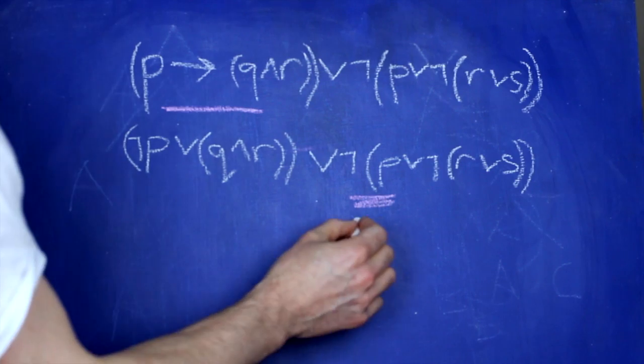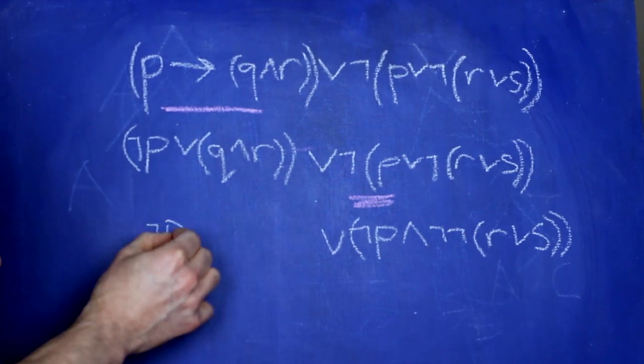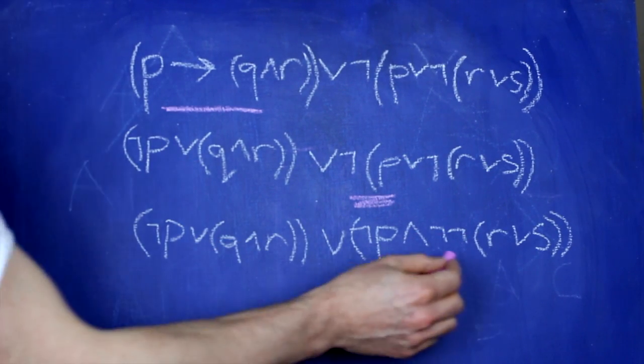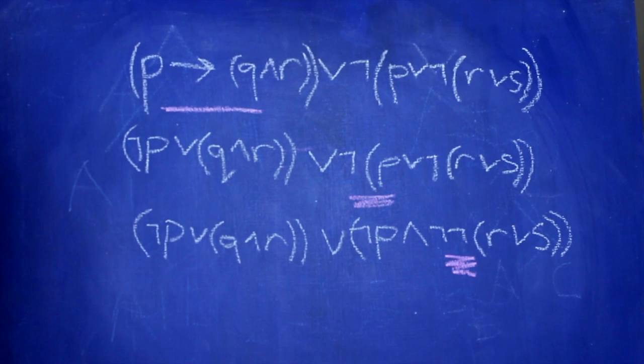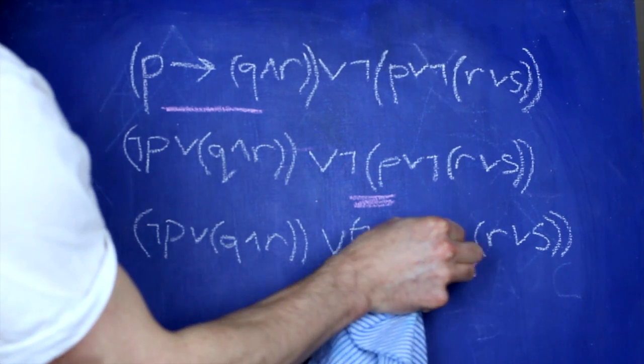We're going to transform it into this using the de Morgan law. Now notice we end up with a double negation. So we can take another step and eliminate that double negation.